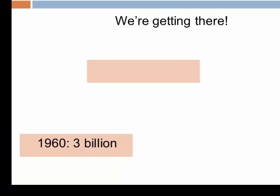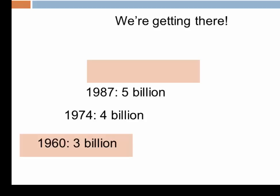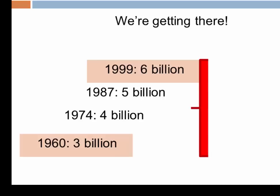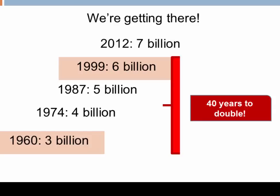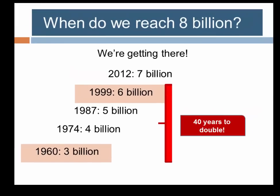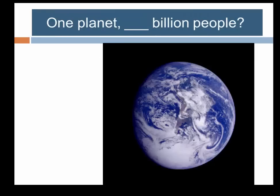Looking at it more precisely: 1960 is a good estimate for when we reached 3 billion. We added another billion by 1974 — about 14 years. Thirteen years later we were at 5 billion, and around 1999, 12 years after that, the human population reached 6 billion. That's roughly 40 years to double between 1960 and 2000, showing that the rate of population increase was itself increasing. By 2012 we'd reached 7 billion, creeping towards 8 billion.